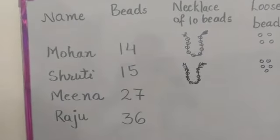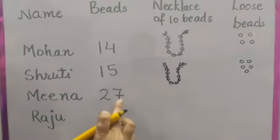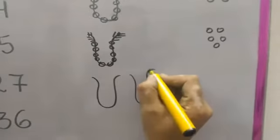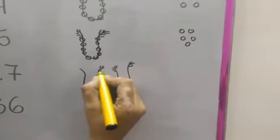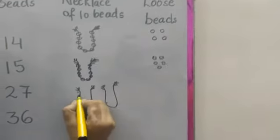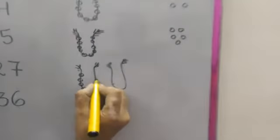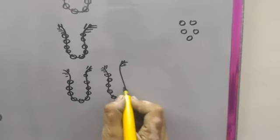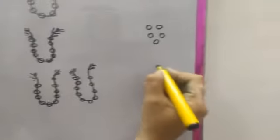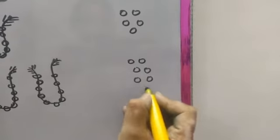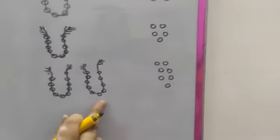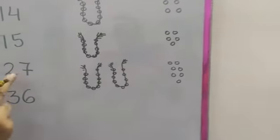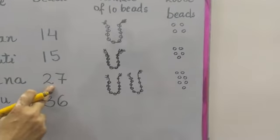Now it's Meena's turn. Meena wants 27 beads. The shopkeeper will give her 2 necklaces of 10 beads and 7 loose beads. So 2 tens and 7 ones: 20 plus 7 equals 27.